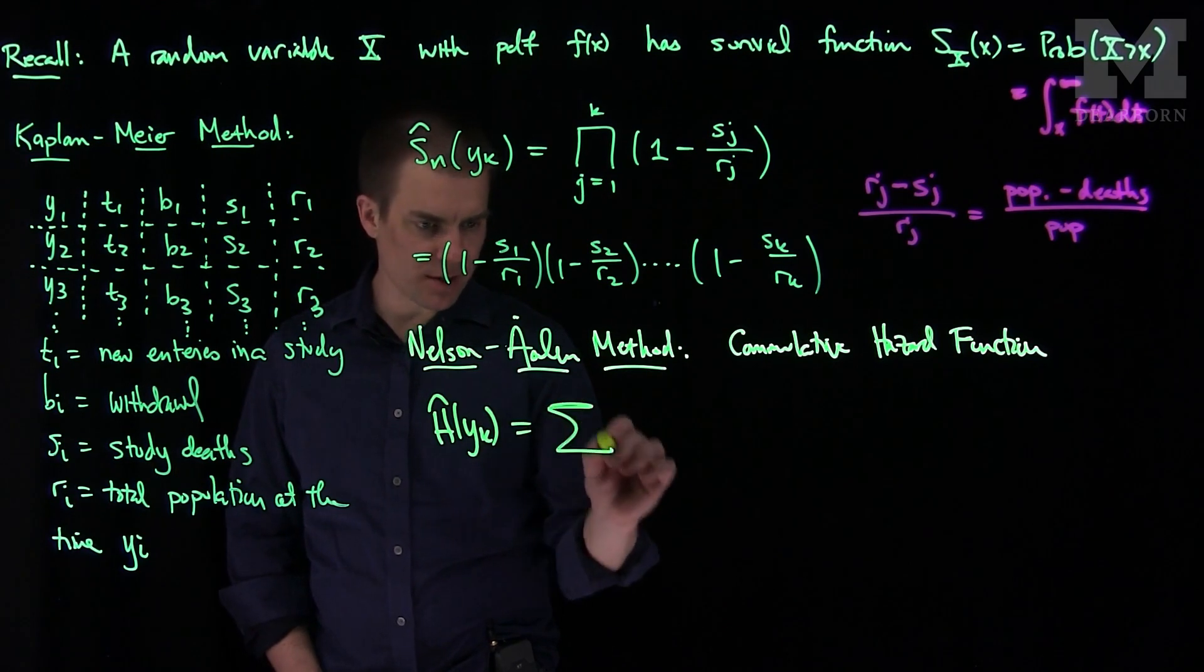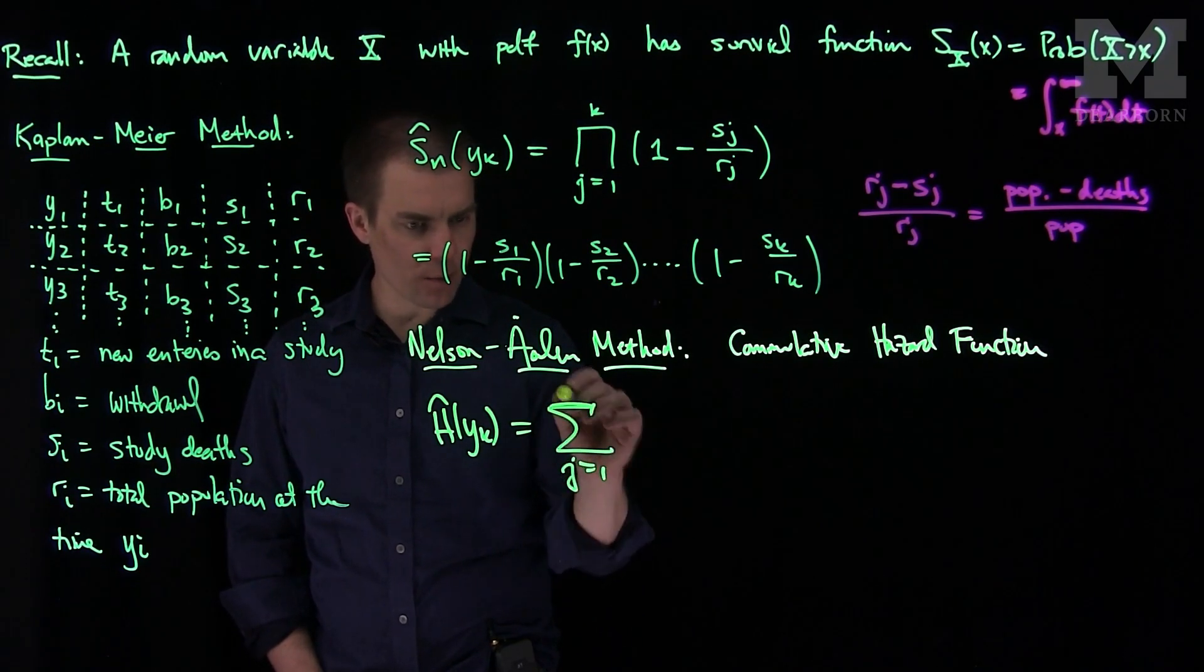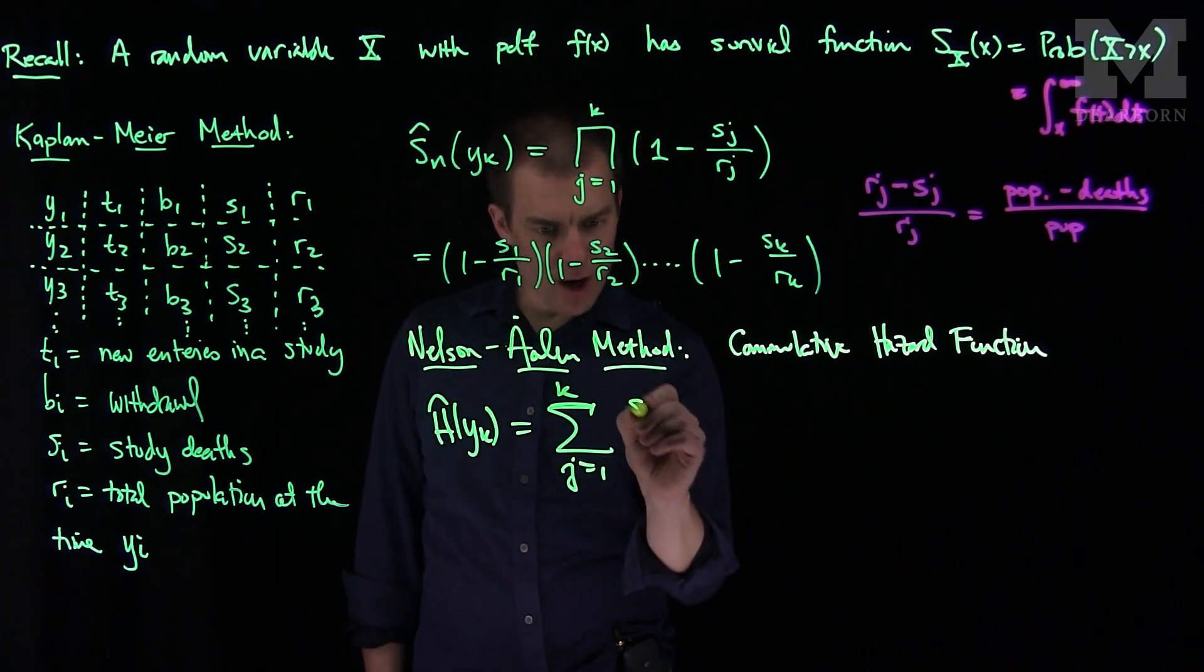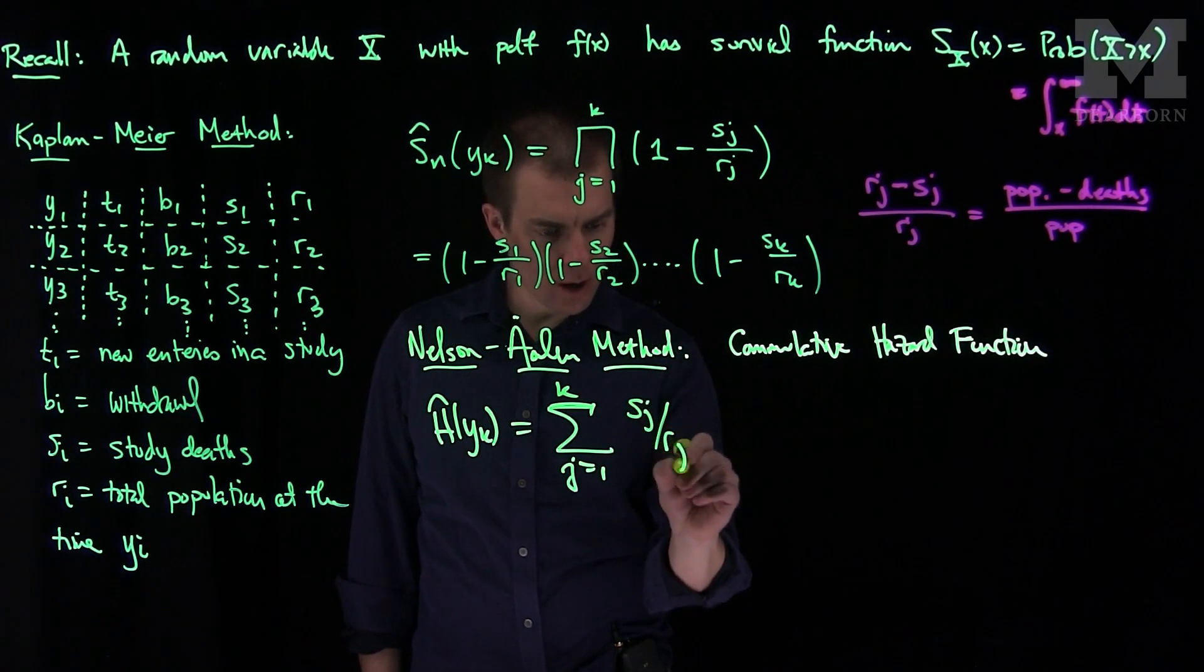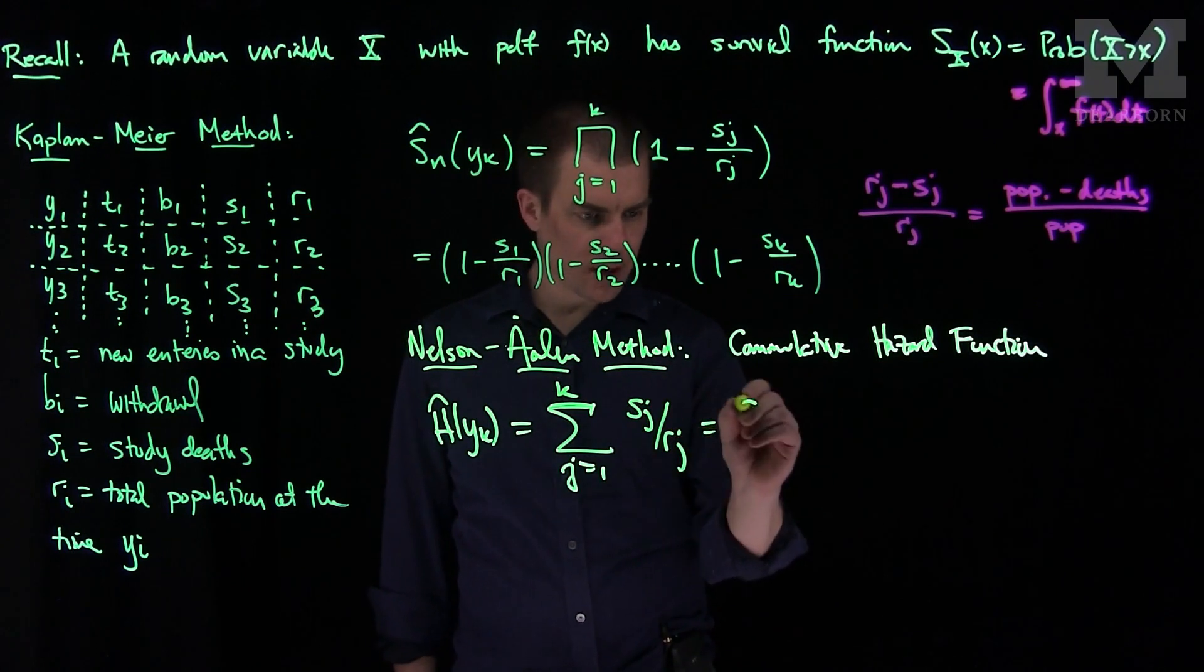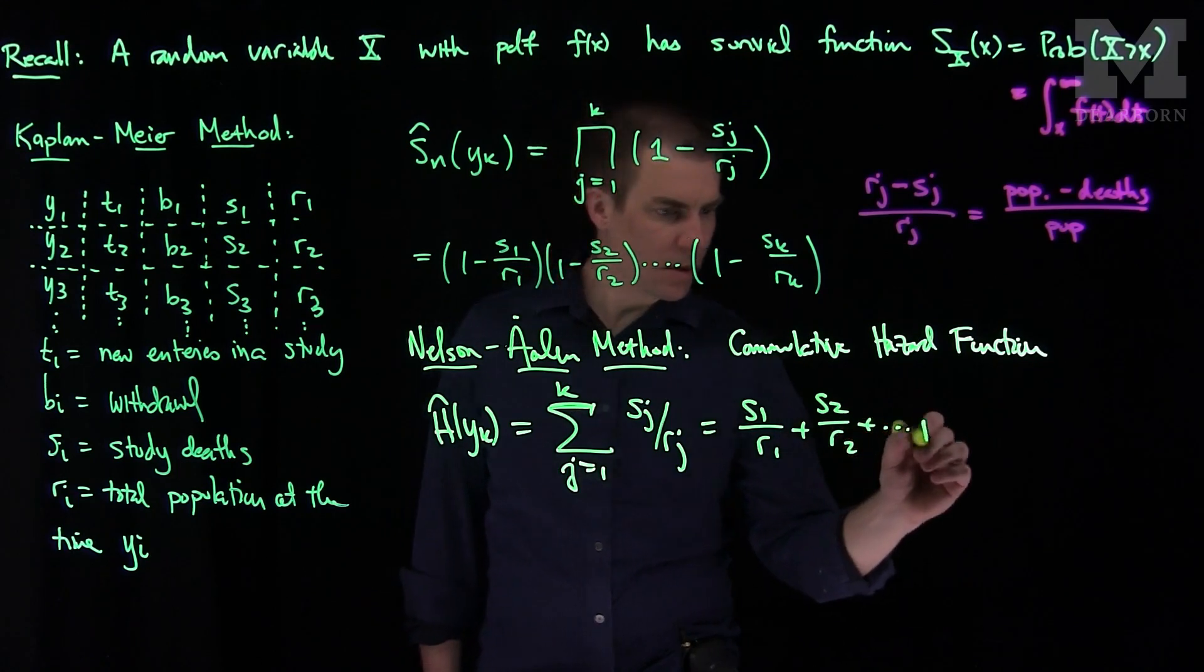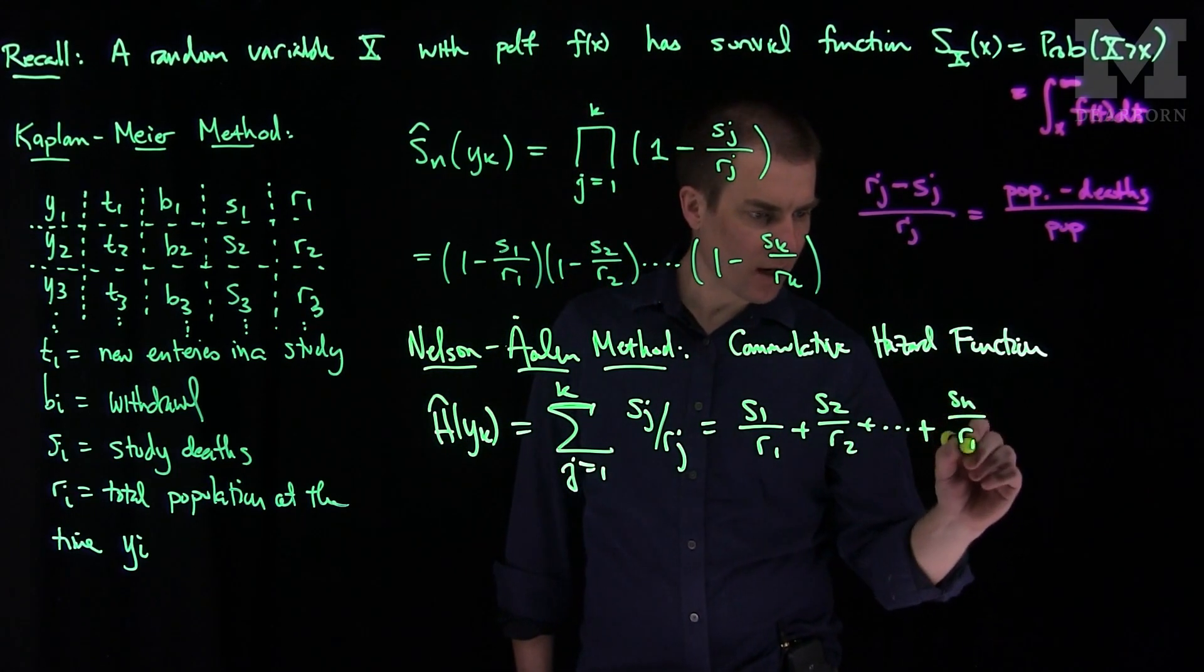So the cumulative hazard function will be approximated by the following: It will be H hat of y_k, and the hazard function will be the sum, j goes from 1 up to k, of s_j/r_j. So this looks like s1/r1 + s2/r2 + ... + sn/rn.